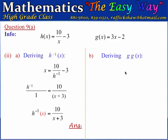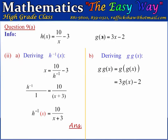Now we need to calculate g of g of x — the composite function of g on itself. g of g of x can be written as g applied to g of x. To calculate this, we substitute g of x into itself — replacing x with g of x. So g of g of x becomes 3 times g of x minus 2. Since g of x itself is 3x minus 2, we substitute 3x minus 2 for g of x.